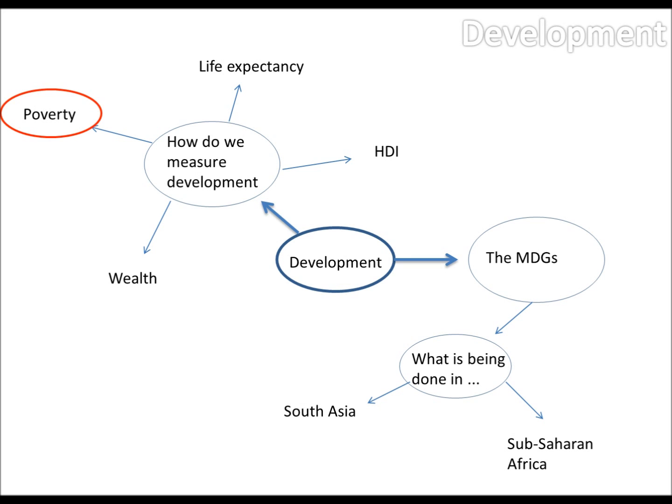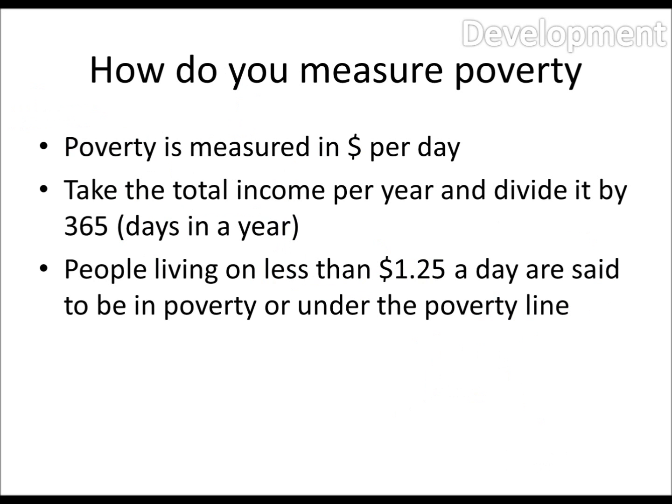Poverty. How do you measure poverty? Well, poverty is measured in dollars per day. To work it out, you take the total income per year and divide it by 365, which is the days in a year. People that live on less than $1.25 a day are said to be in poverty, or under the poverty line.